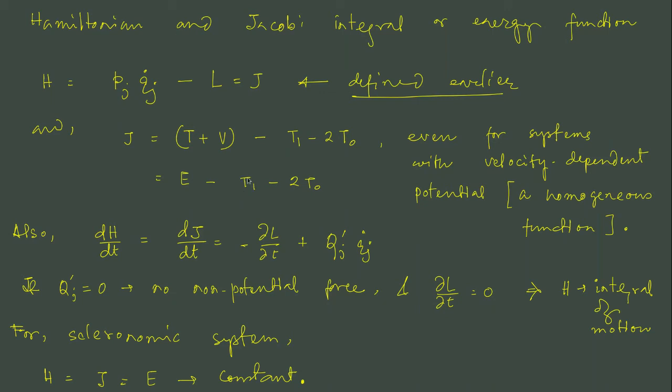So this typically happens if you have a rheonomic system where the coordinates, the Cartesian coordinates, are functions of time, and then when you move to generalized coordinate you end up with some quantity like del r del t and del r del qj. The del r del t, the explicit dependence of coordinate on time, is present in T1 and T0. So if it happens that we are dealing with a scleronomic system, in that case T1 and T0 both vanish. In that case the energy would be simply a conserved quantity.